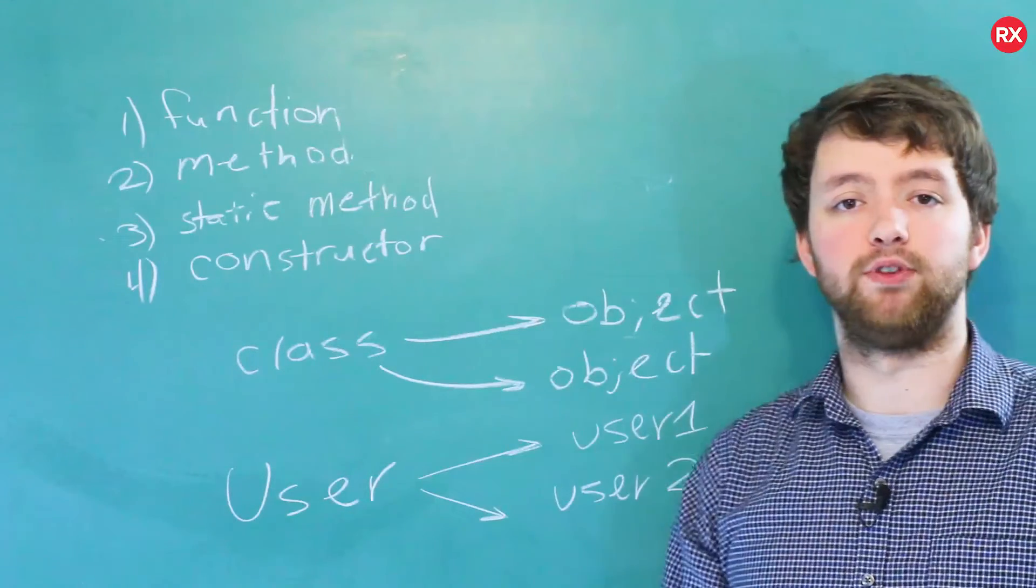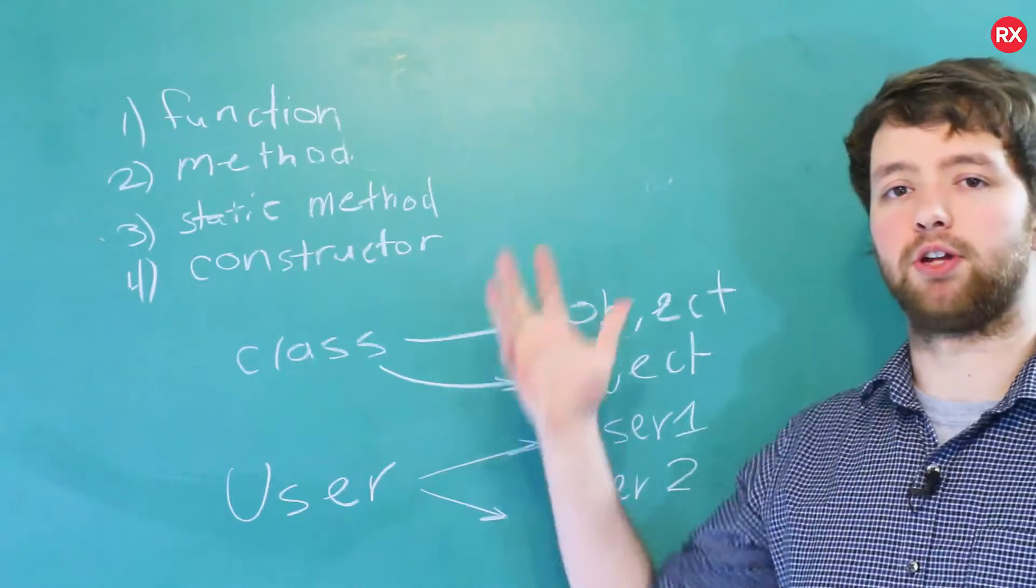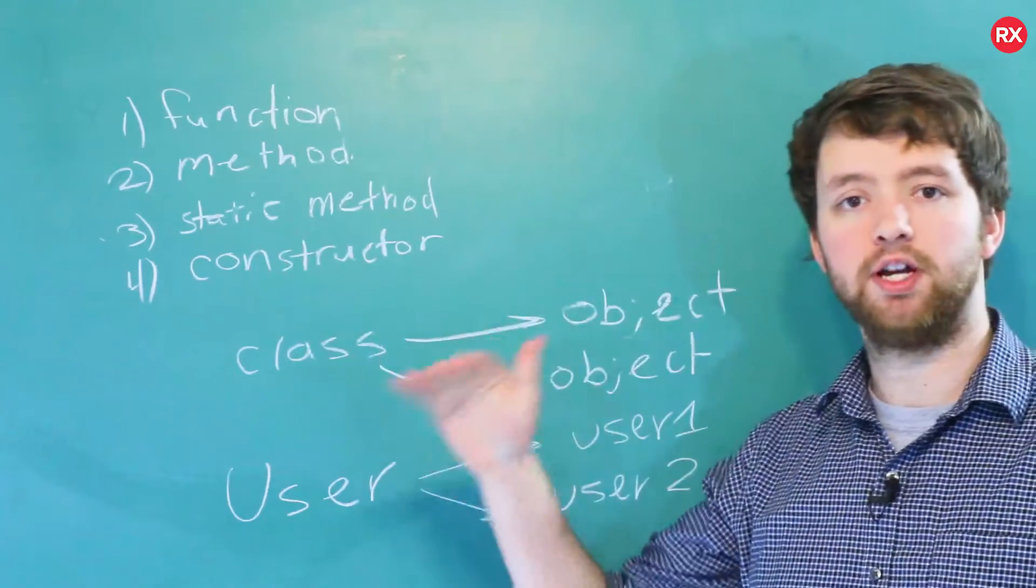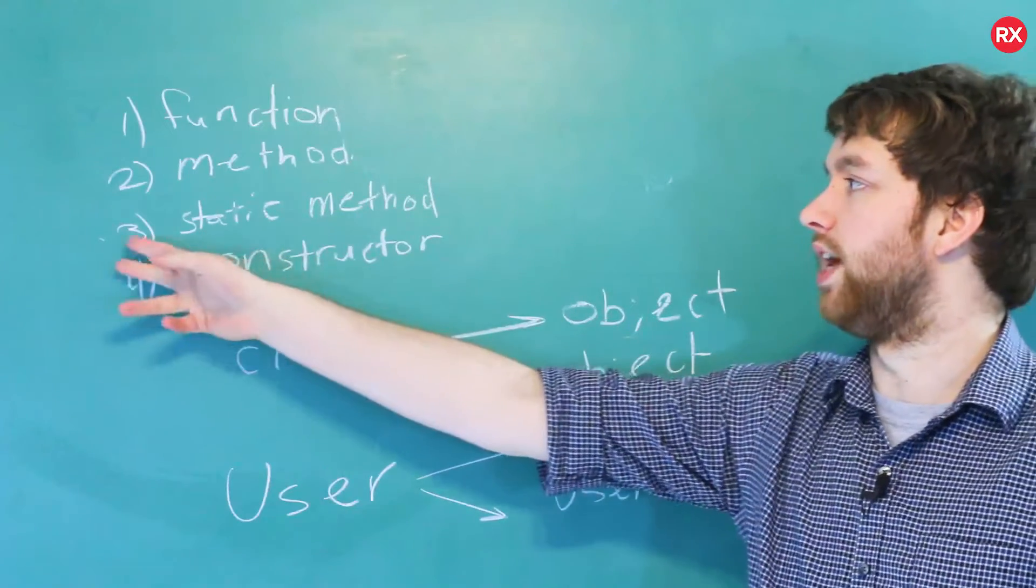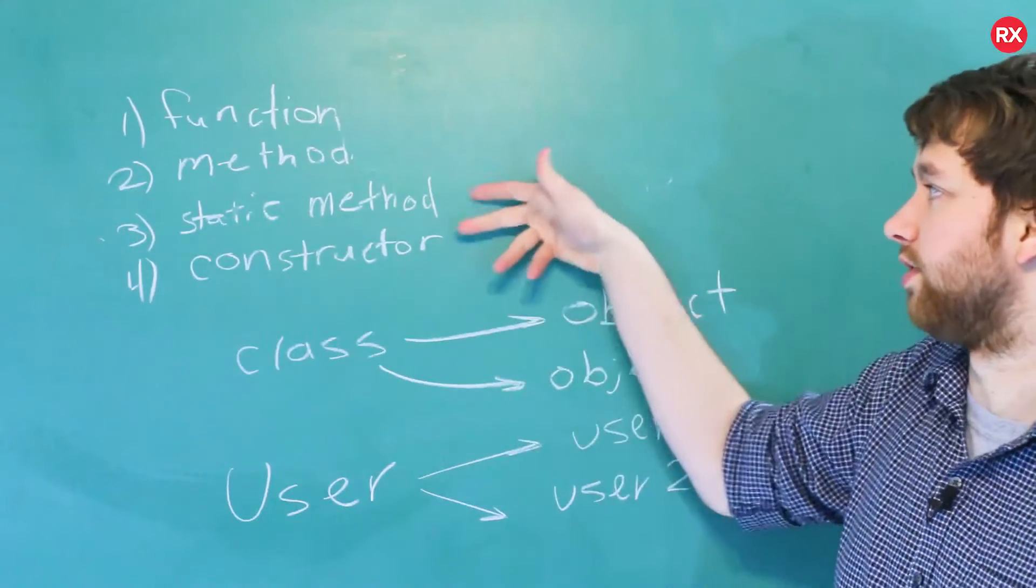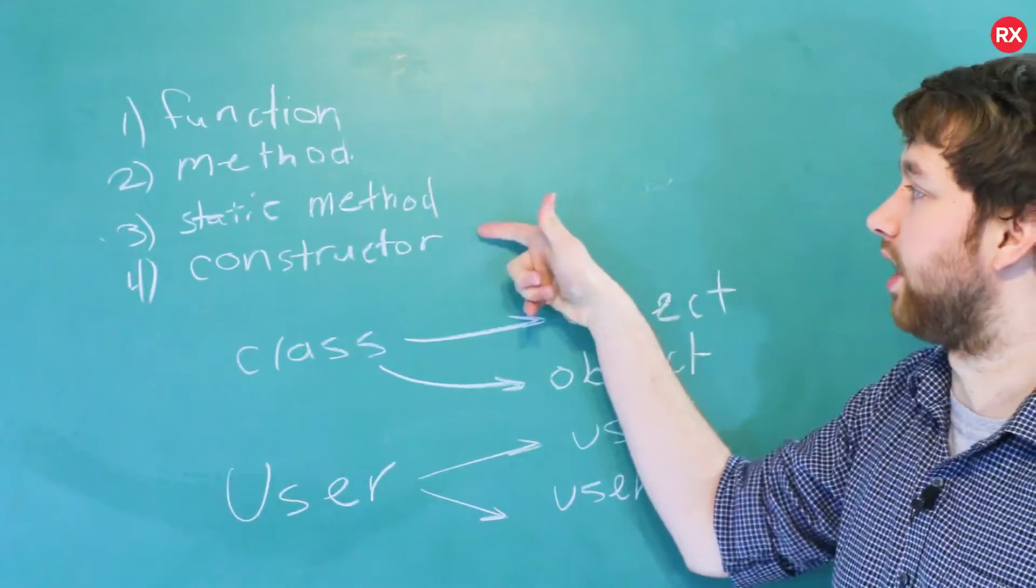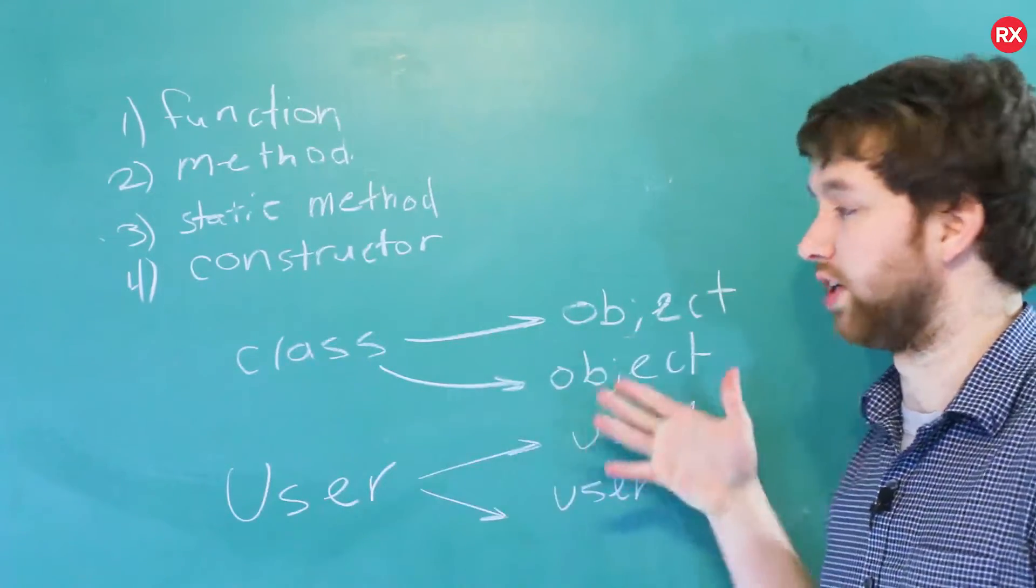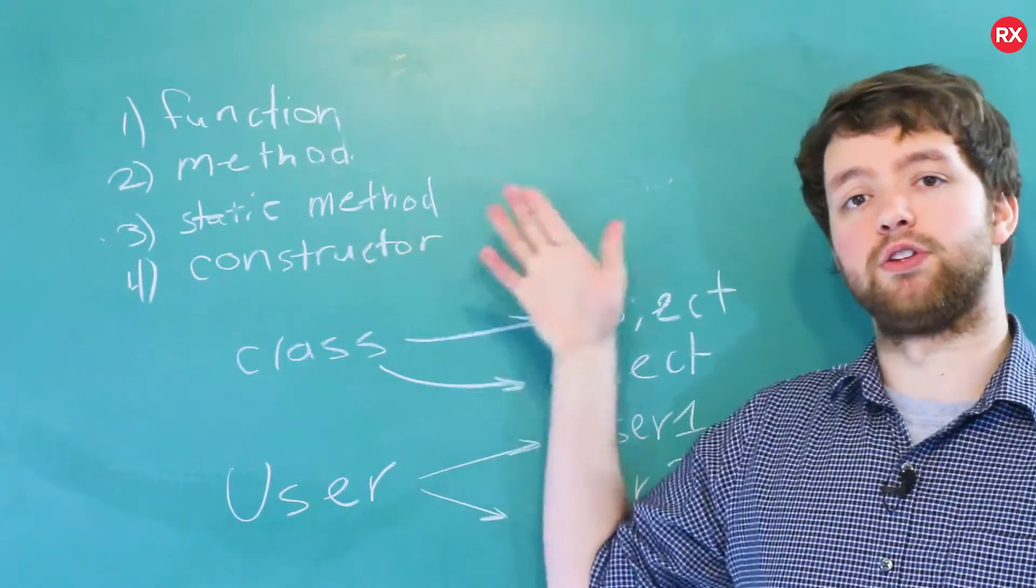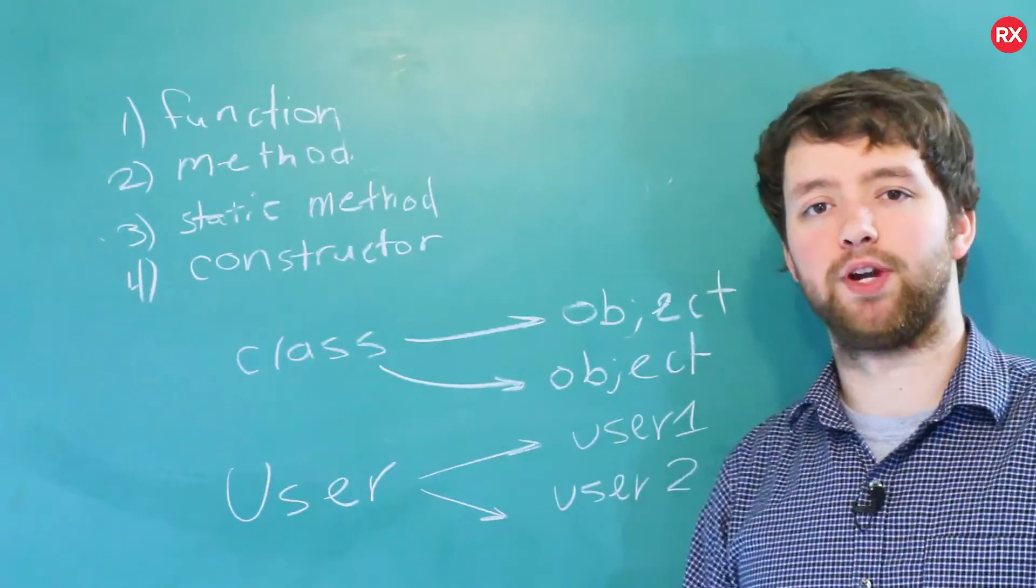Now, maybe towards the end, it got a little bit more confusing for you guys. And that's totally fine. Don't expect to have all of that understood right now. The main thing you need to understand again is functions and methods. And then we'll get into these kind of special functions. The static methods and the constructor, which is kind of just like a method called when an object is created. We'll get into those in more detail once we talk about object-oriented programming.